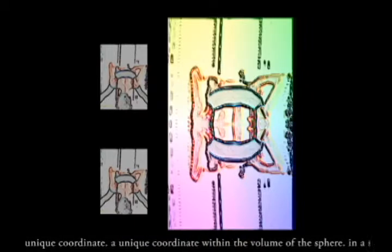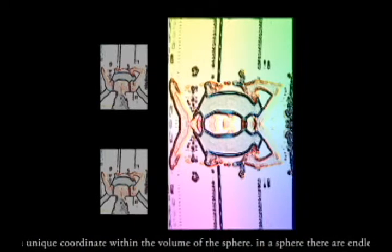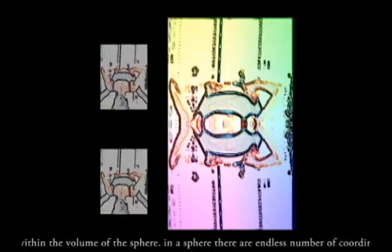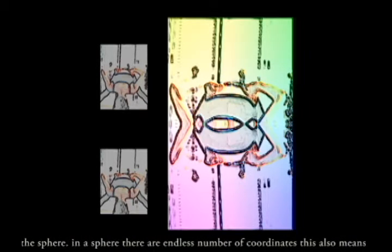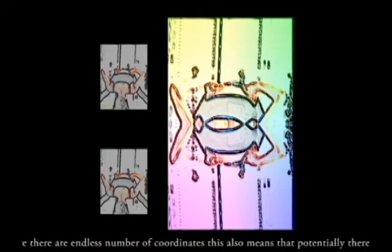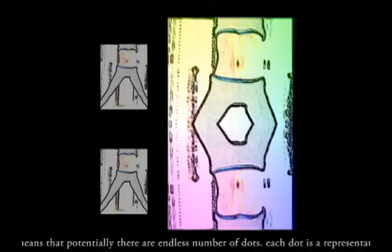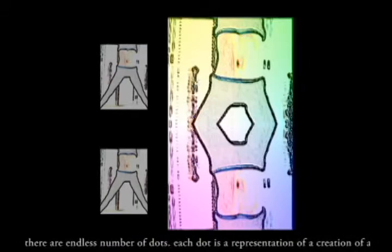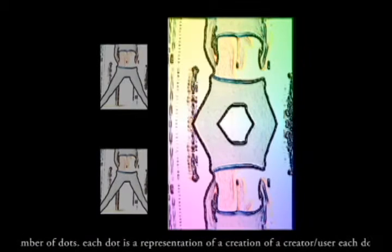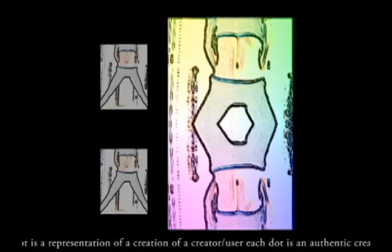Each dot in the stone are coordinates of a sphere. In a sphere there are endless number of coordinates. This also means that potentially there are endless number of dots.